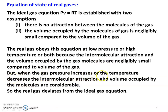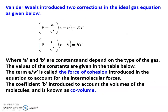When the gas pressure increases or the temperature decreases, the intermolecular attraction and the volume occupied by the gas molecules become considerable, so the real gas deviates from the ideal gas equation. Van der Waals is a scientist who conducted research on gas behavior and introduced two corrections to PV equal to RT: adding an A by V-squared term to pressure, and subtracting B from volume, giving the equation P plus A by V-squared into V minus B equal to RT.